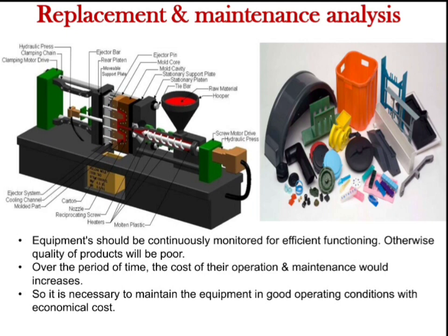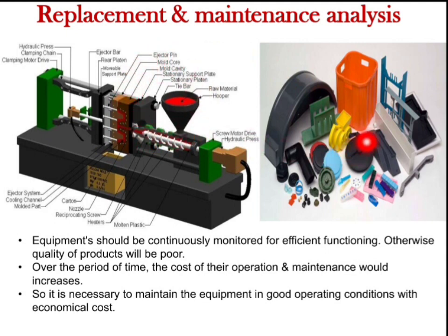For example, in residential purposes we use mixie grinders and motors to fulfill our needs. In the manufacturing industry, manufacturers use machines to convert raw material into finished product. For example, in this picture I have shown the injection molding machine, with the help of which we can produce plastic components. The quality of these plastic components mainly depends on the machine. If the machine works properly, we will get better quality products.